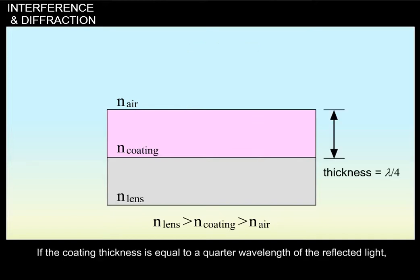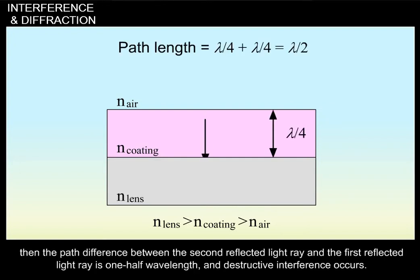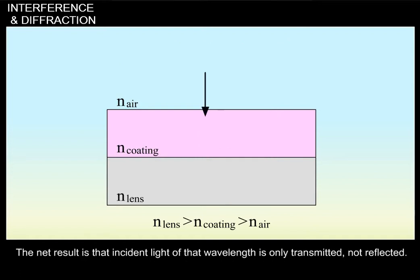If the coating thickness is equal to a quarter wavelength of the reflected light, then the path difference between the second reflected light ray and the first reflected light ray is one half wavelength and destructive interference occurs. The net result is that incident light of that wavelength is only transmitted, not reflected.